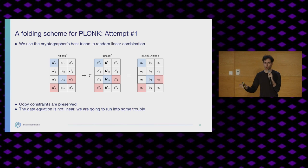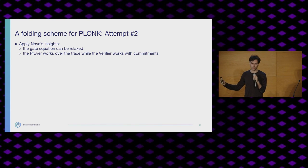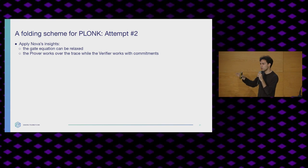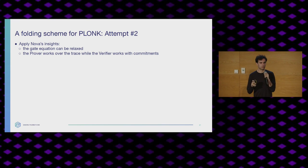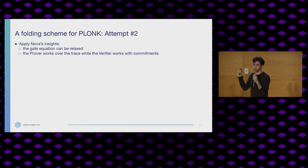Luckily, Nova sort of solved this for us already. These are the insights from the Nova paper: you are allowed to relax your gate equation — change it ever so slightly so that you can still express anything you wanted, but it becomes more folding-friendly. The other thing is, for the verifier to hold the prover accountable, it can work with commitments. Commitments are also very short, so the verifier does very little work. On the other hand, the prover still works with the full trace.